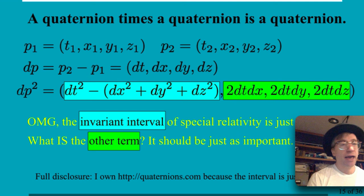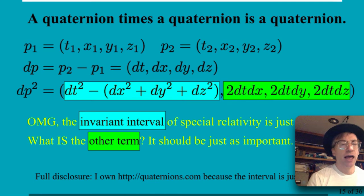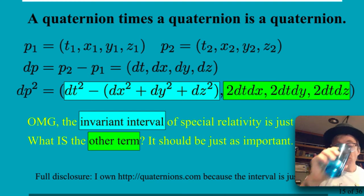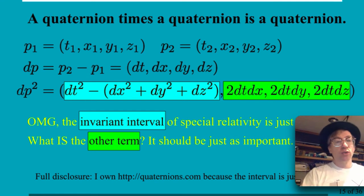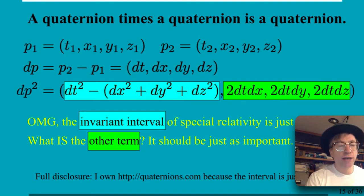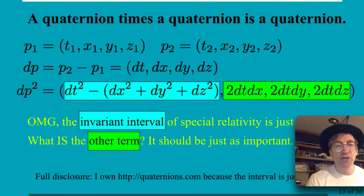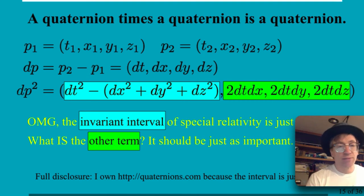A quaternion times a quaternion is a quaternion. I take whatever pair of events I want and usually think about the change in events — the delta — so I don't have to worry about where the origin is. Those points could be arbitrarily close to one another in spacetime. When I calculate the square, the part in blue gives dx² + dy² + dz², something the Egyptians knew about — different surveyors on the Nile could agree on that value even if they disagreed on individual x, y, z coordinates.